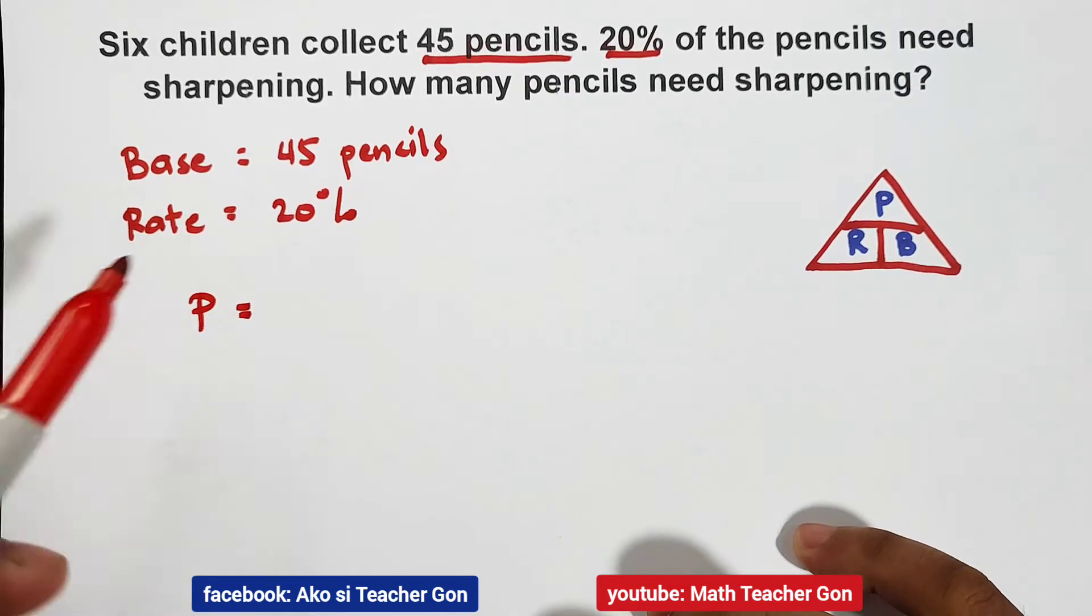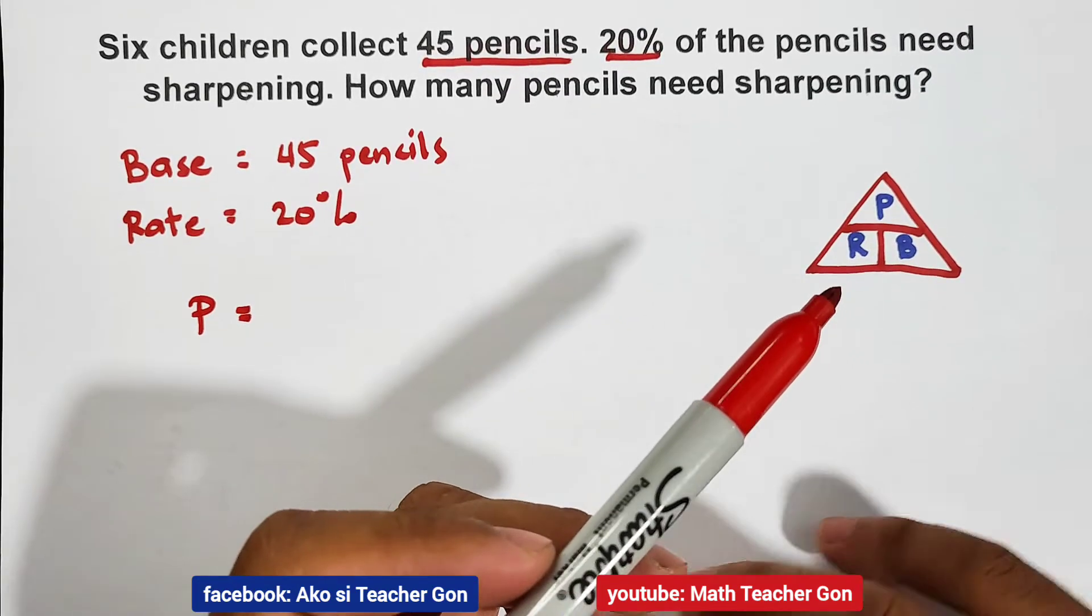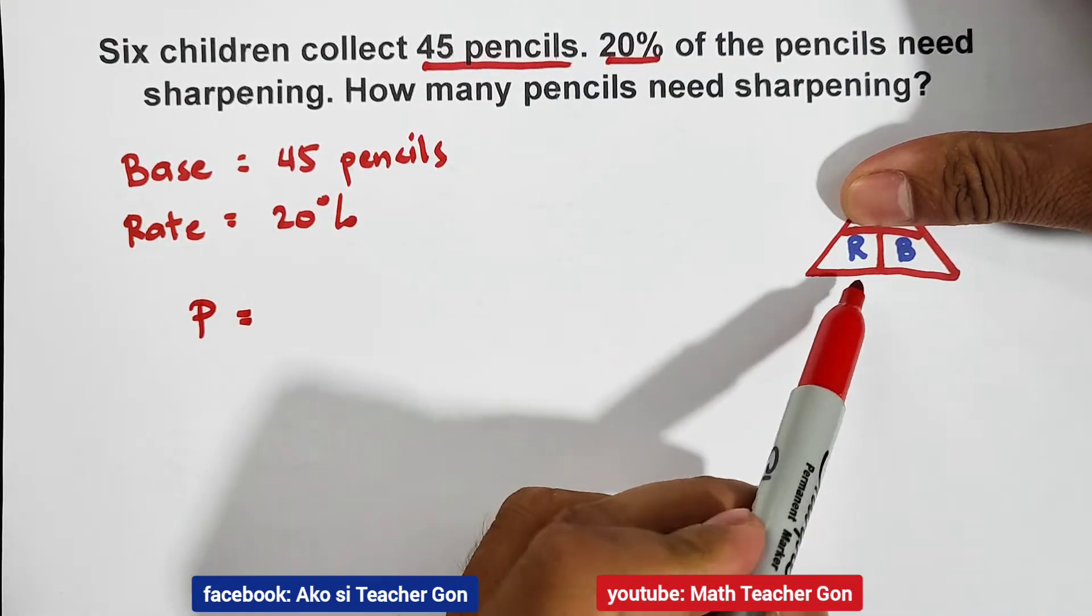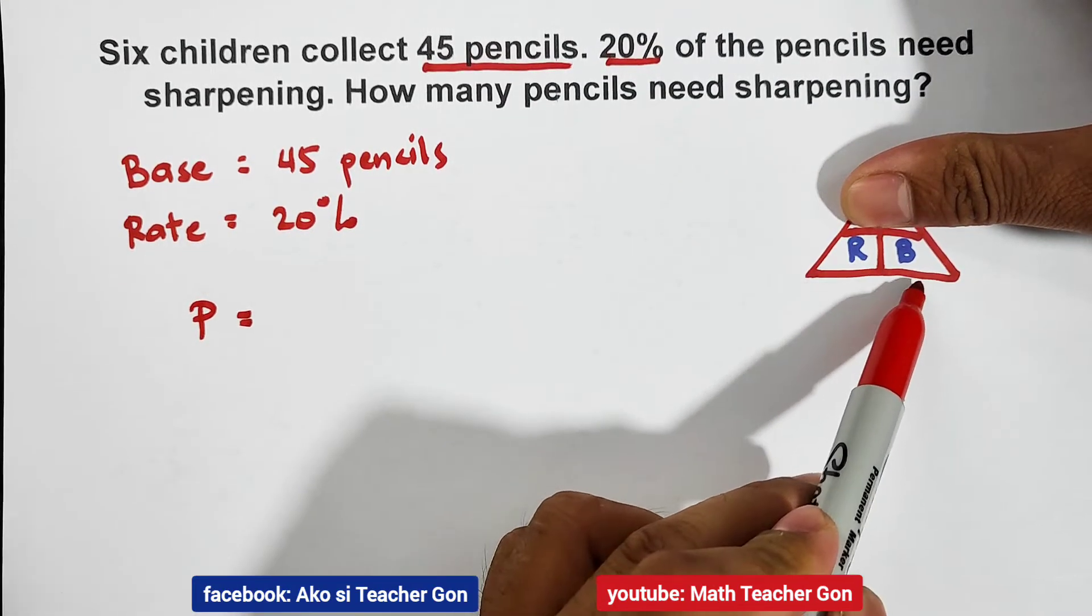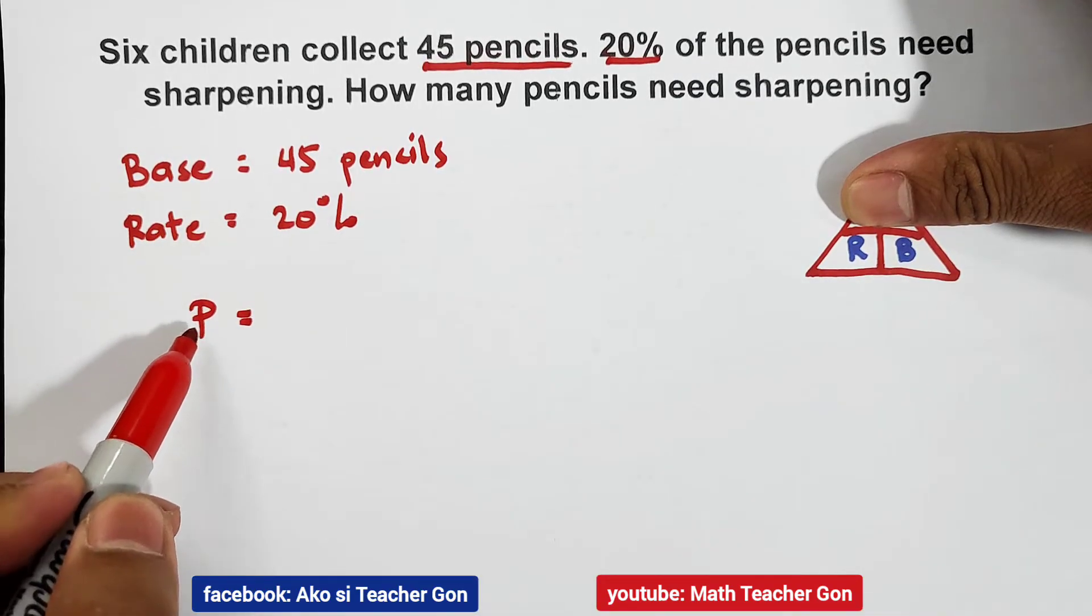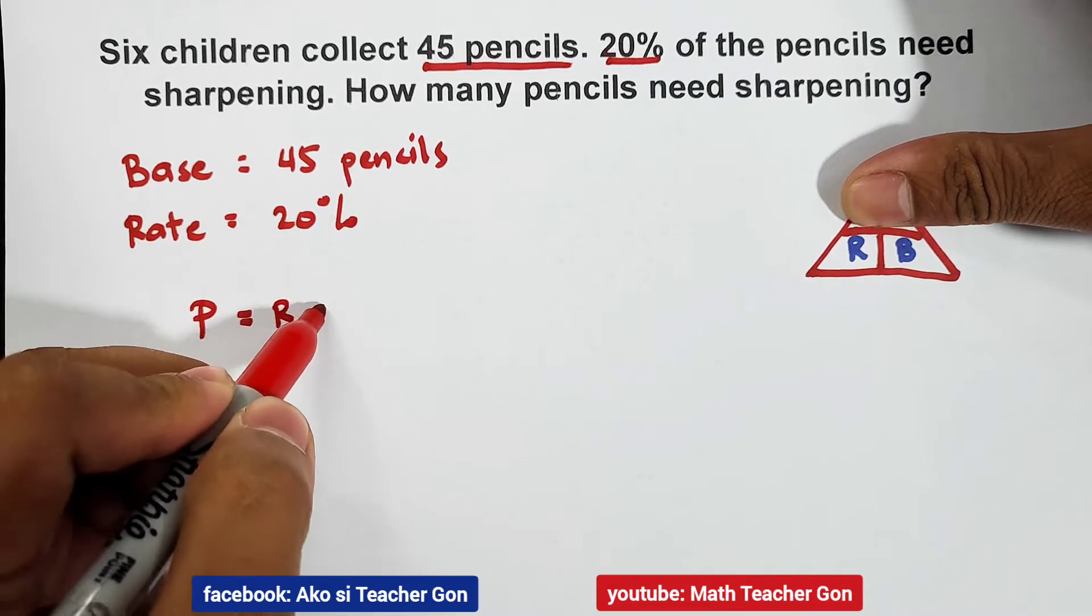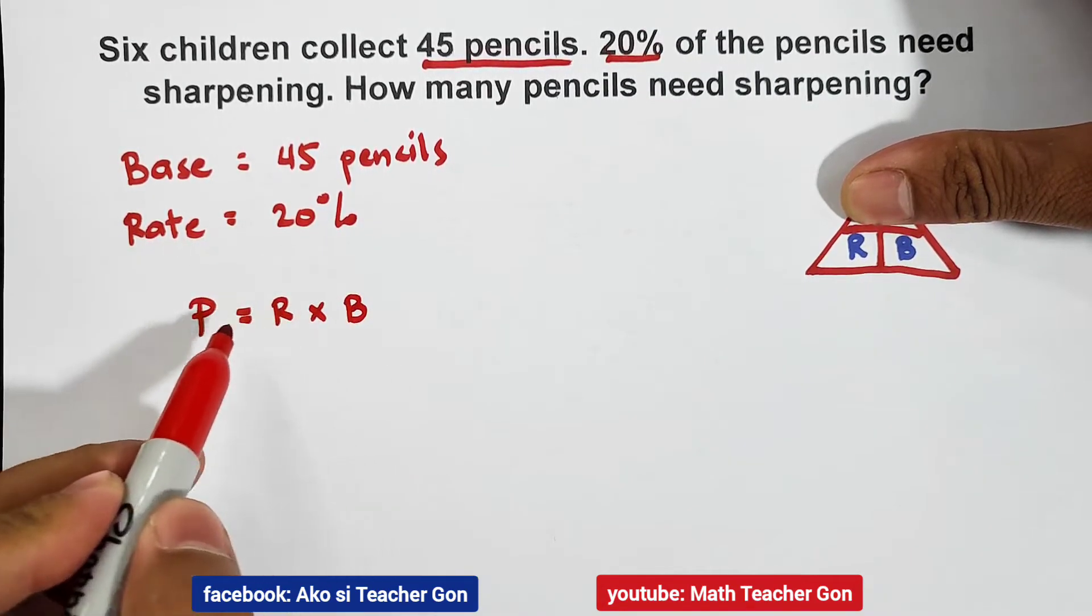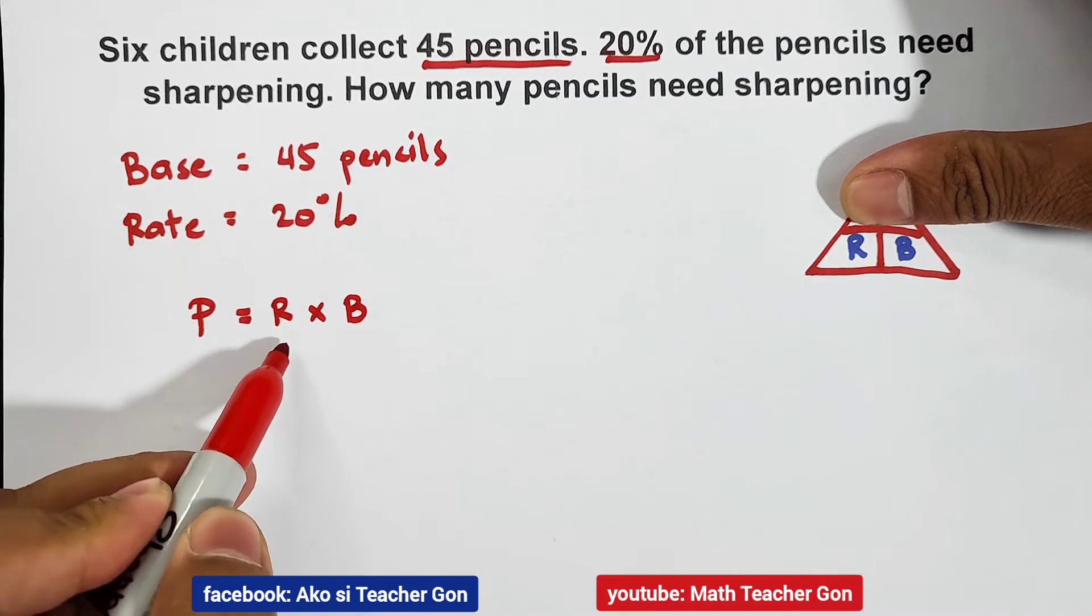To get the formula for P using this triangle, cover P, and as you can see, R and B are side by side. It implies multiplication. So percentage is equal to rate times base, or you can switch it: percentage is equal to base times rate.